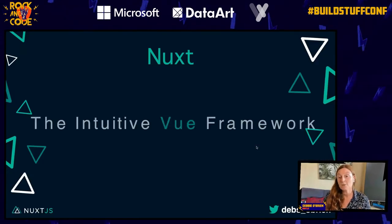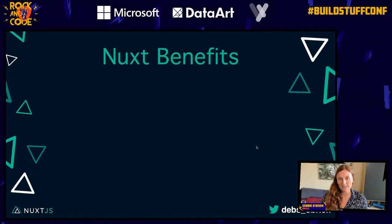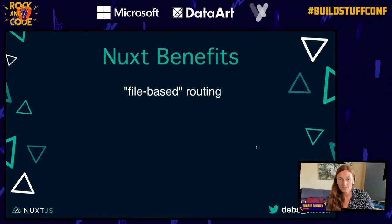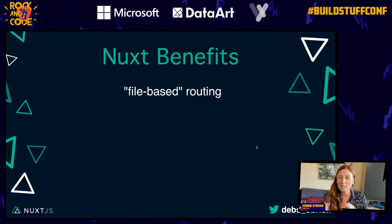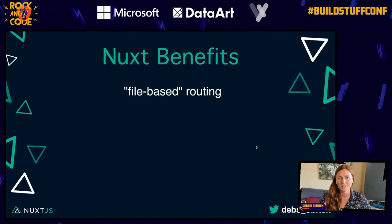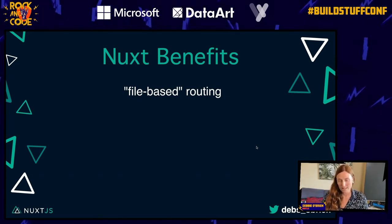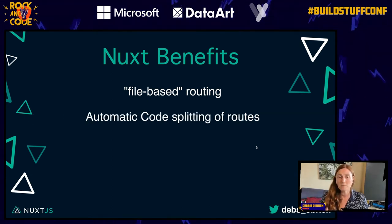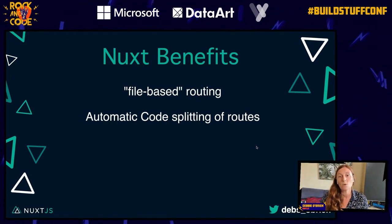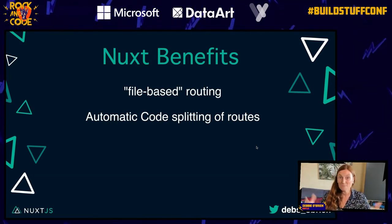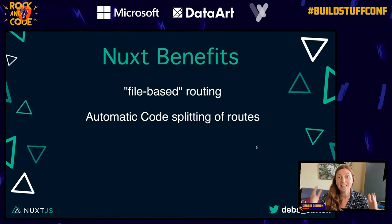Nuxt is an intuitive Vue framework. It gives you a lot of benefits. For example, file-based routing — you just put a Vue file in the Pages folder and you get automatic routing. There's no router.js file to maintain, and you get automatic code splitting out of the box. Code splitting means only the JavaScript code for that page is downloaded, making your website much more performant.